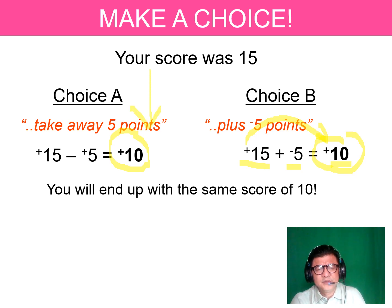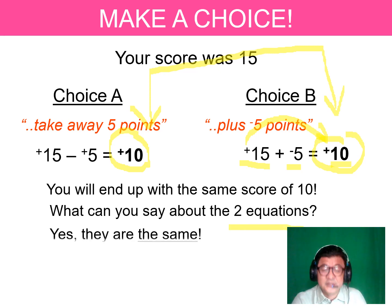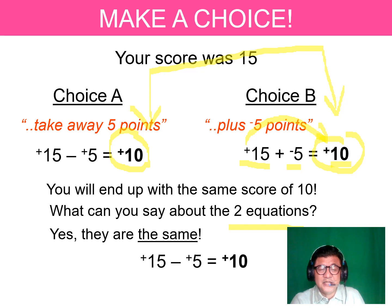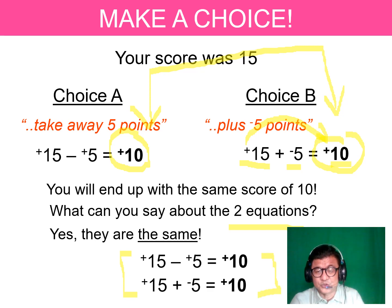How come? One is adding and the other is subtracting. What can you say about the two equations? They are the same. Let's see why. 15 minus 5 equals 10, and 15 plus negative 5 also equals 10. They are the same result.